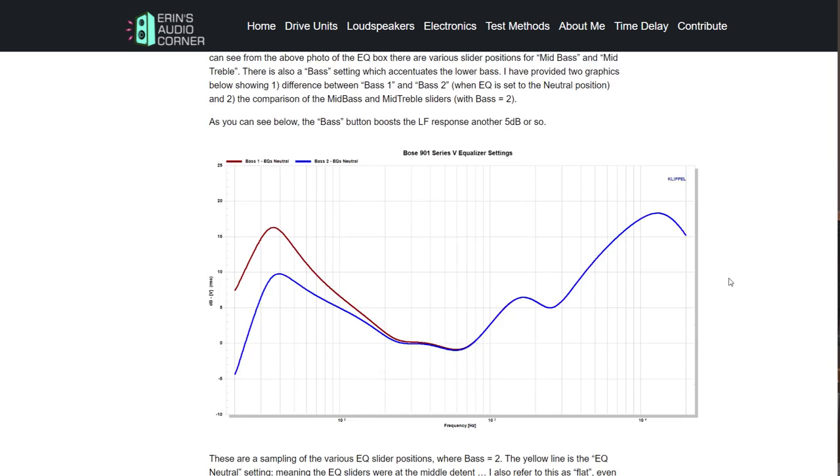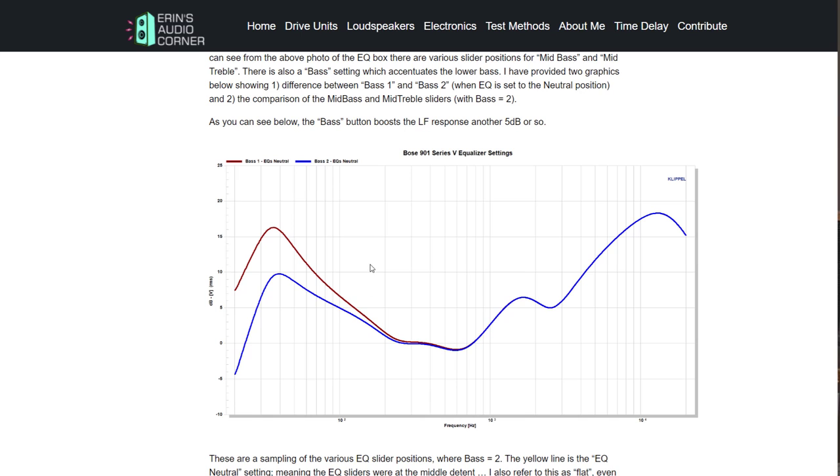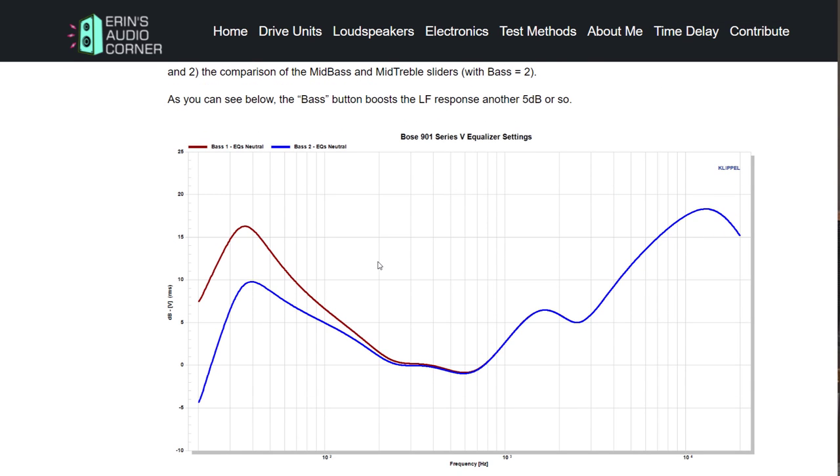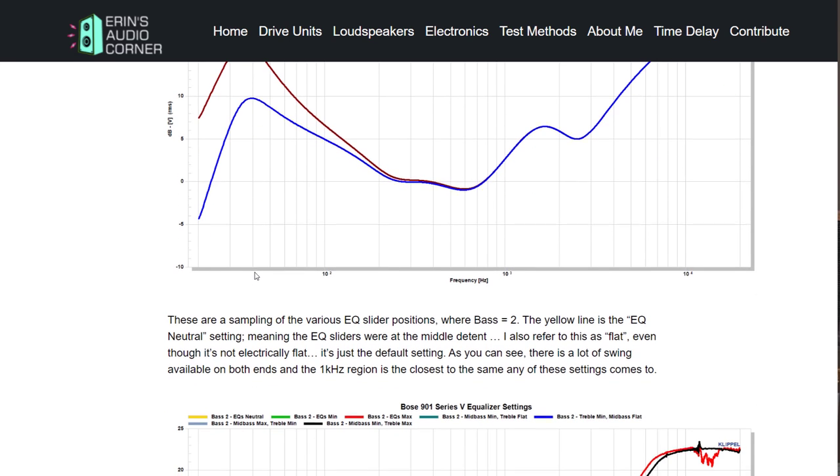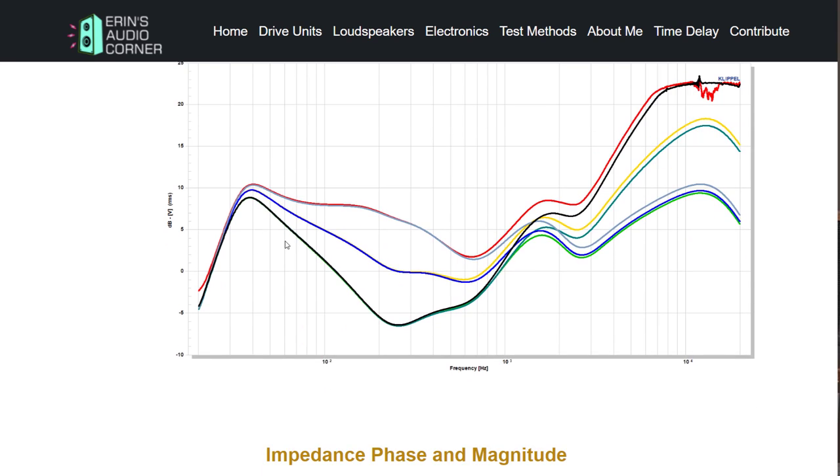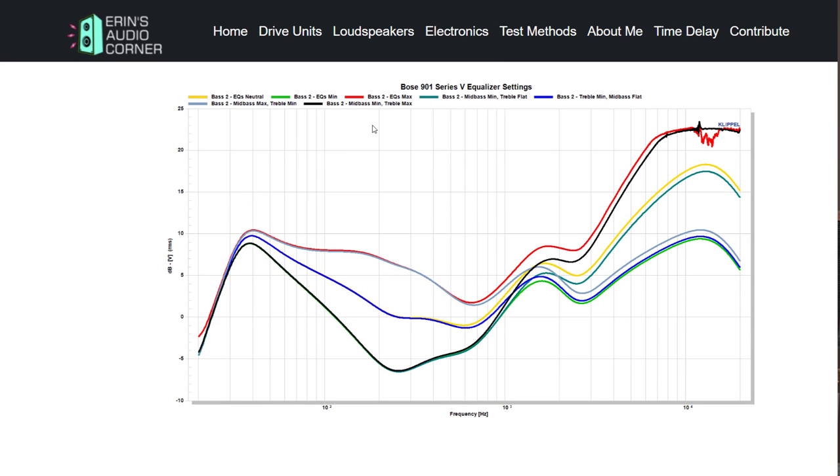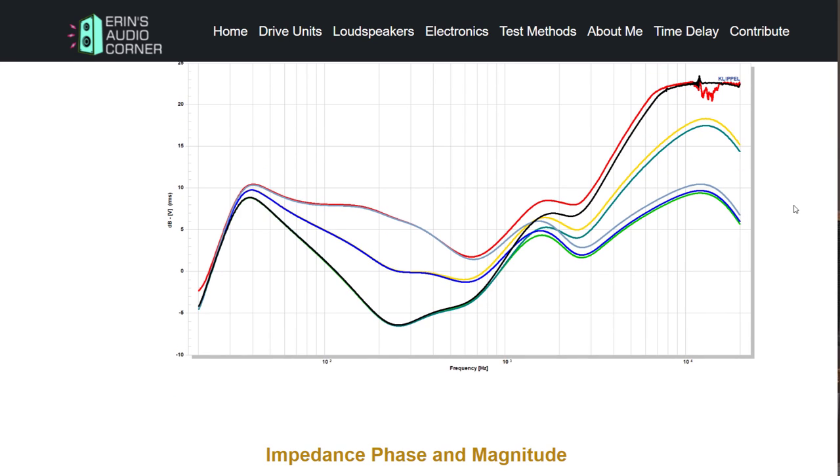So the EQ box testing, that is literally me taking an input to the EQ box which is this thing and feeding it a signal and then measuring what comes out of it. So this first graph is the input and the output with bass one or bass two and you can see there's about a 5 dB, 7 dB difference between the two different settings. Now for the rest of my measurements I left it at bass two and then I continue to toggle the slider so mid bass, mid treble forward and backward to kind of see what the differences are here.